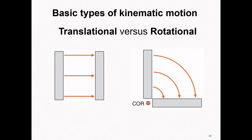There are two basic types of kinematic motion. On the left, we see an object being translated — that is, the object is undergoing translational motion. On the right, we see a depiction of rotational motion. In a moment, I'll be giving you a more formal definition of the differences between these two motion types.